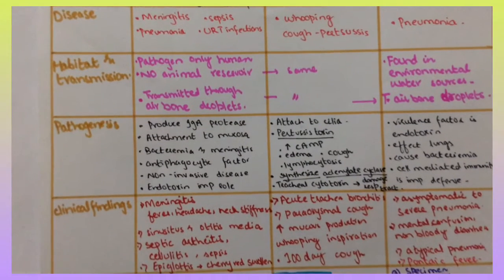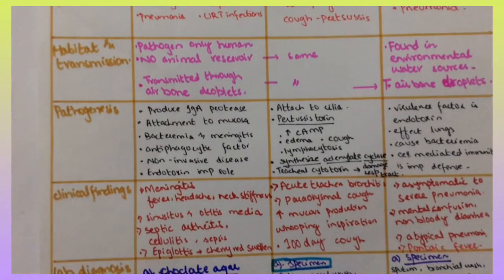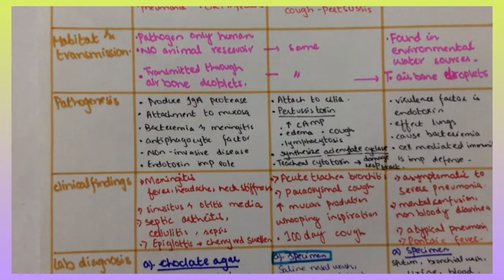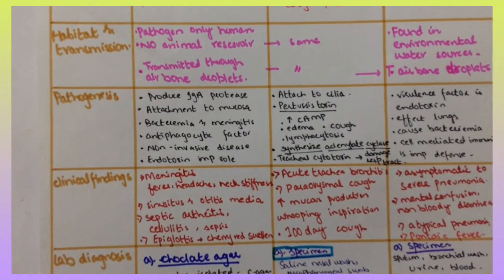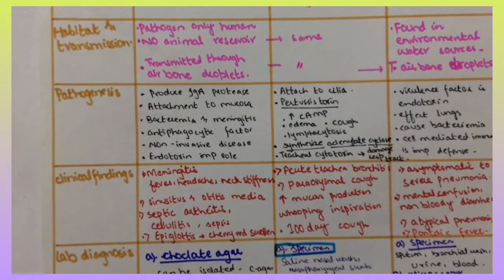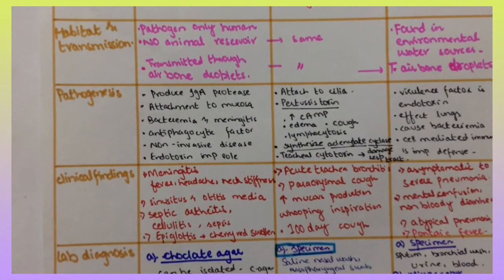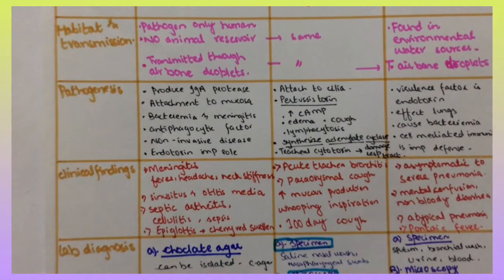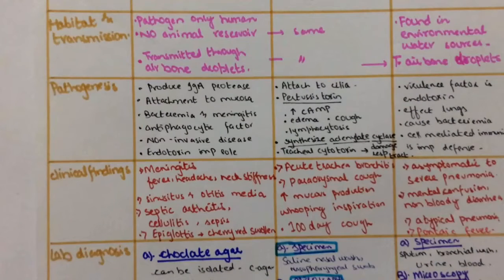Bordetella attaches to cilia by pilli protein called hemagglutinin, invades the underlying tissue, produces toxin through ADP ribosylation resulting in prolonged stimulation of adenylate cyclase and raises cyclic AMP.